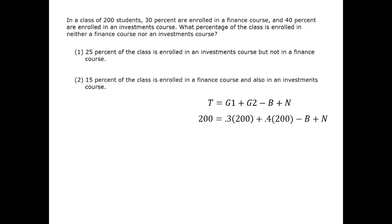In this equation, we can apply by putting in the values that we know. G1 here is the enrollment in the finance course, and G2 is the enrollment in the investments course. We also have the total number of students. For that reason, we're down to B and N.